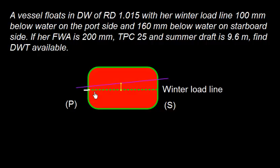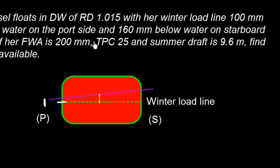The winter load line is 100 mm below water on the port side. On the starboard side, it is 160 mm below water line.